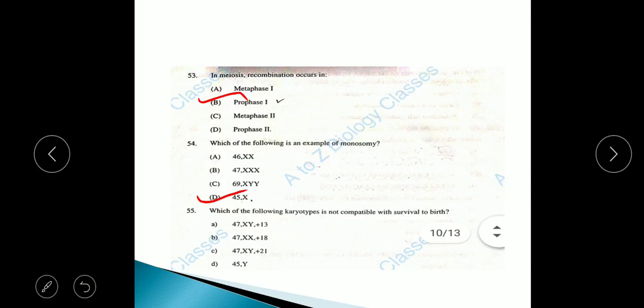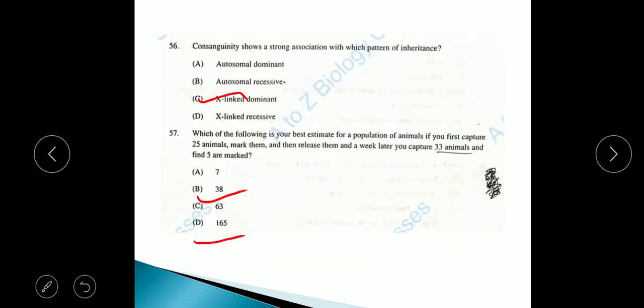Question 55: Which of the following karyotypes is not compatible with survival to birth? The answer is option B, 47XX plus 18, that is trisomic Edward syndrome. Question 56: Consanguinity shows a strong association with which pattern of inheritance? The answer is option B, autosomal recessive.